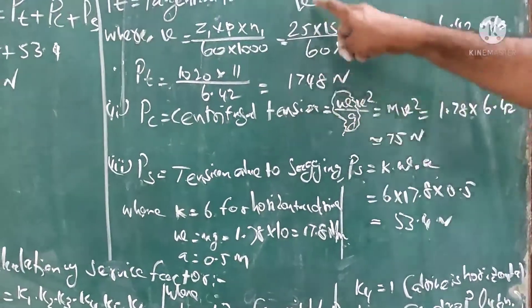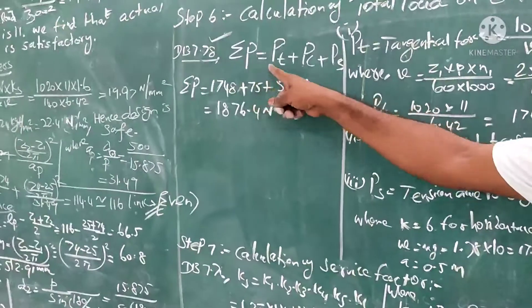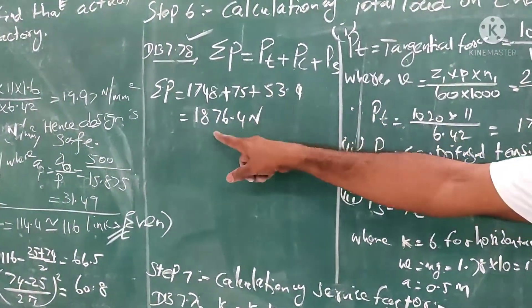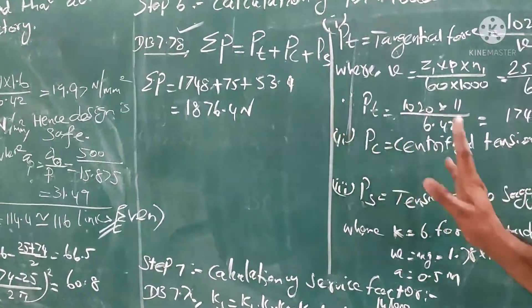After calculating these three loads, now we calculate total load: 1748 + 75 + 53.4 = 1876.4 Newton.